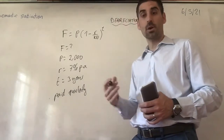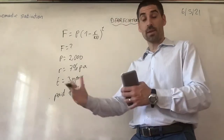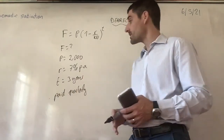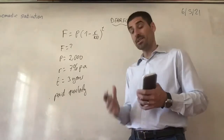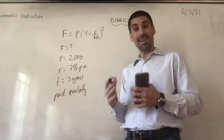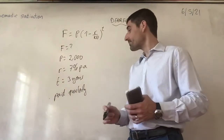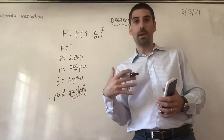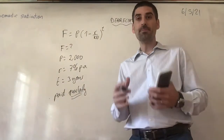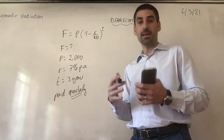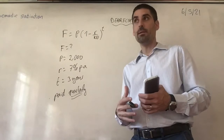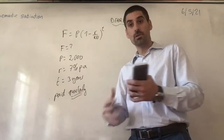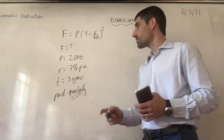But then you need to be careful, because the question may say something like 'interest is paid quarterly' — so every quarter of a year, every three months, they pay interest. That means we need to change things around a little bit. Sometimes the interest may be monthly, sometimes semi-annually, so you need to make adjustments.